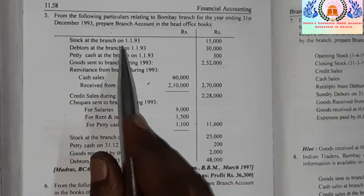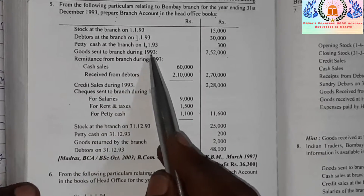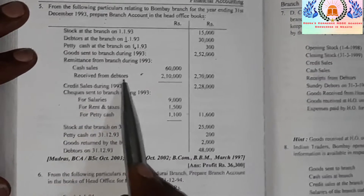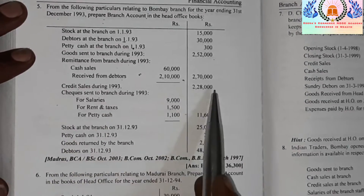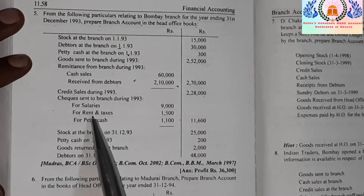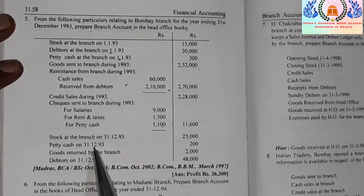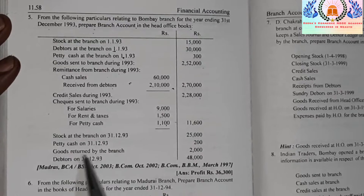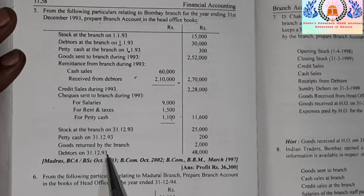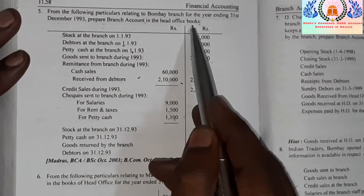The given data includes: opening stock, opening debtors, opening petty cash, goods sent to branch, remittance from branch, cash sales, cash from debtors, credit sales for the year, cheques sent to branch, expenses made by head office for salary, rent, and petty cash, closing stock, closing petty cash, goods returned by the branch, and closing debtors.